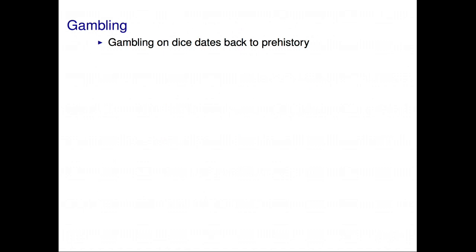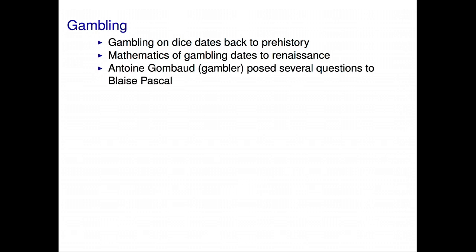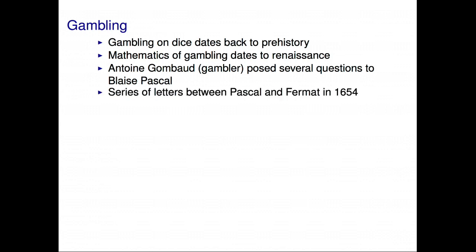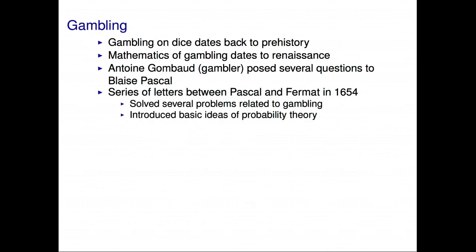Now gambling on dice dates back to prehistory, but the mathematics of gambling dates only to the Renaissance. A turning point occurred in 1654, when a well-known gambler who liked to associate with Europe's intellectuals posed several questions to the famous mathematician Blaise Pascal. Pascal then exchanged a series of letters with another famous mathematician, Fermat. And in this exchange, the pair solved several specific problems related to gambling, but more importantly, they introduced the basic ideas of probability theory.